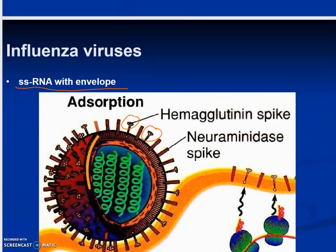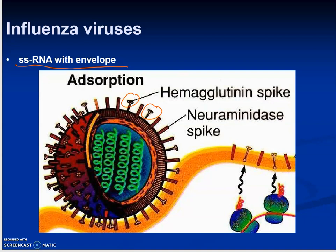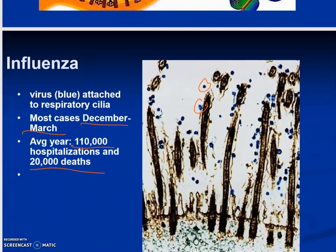Moving on to influenza viruses — this is a group of viruses that cause the flu. These are single-stranded RNA viruses with an envelope. They are considered retroviruses and they have H and N antigens: the hemagglutinin spike and the neuraminidase spike. These H and N antigens change every year, which is why you need to get a new flu shot every year. The H and N antigen combinations change, so a new vaccine is required.